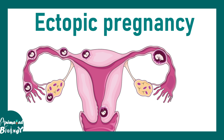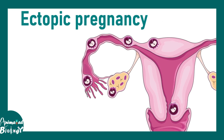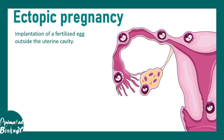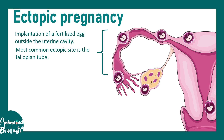In this video we'll be talking about ectopic pregnancy. Ectopic pregnancy simply means where pregnancy happens in an offbeat location. Generally, implantation of the fertilized egg or blastocyst happens in the uterine cavity in the endometrial lining, but in ectopic pregnancy implantation happens somewhere else. The most common site is the fallopian tube, accounting for about 95% of ectopic pregnancy cases.